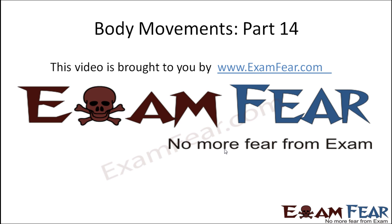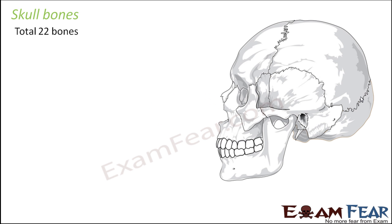This video on body movements part 14 is brought to you by examfear.com. Now, there are 22 bones present in the skull. You may have noticed there is no movement in the skull — it is a fixed, hard structure. That is because the joints in the skull bones are all fixed, immovable joints, so they do not allow movement.